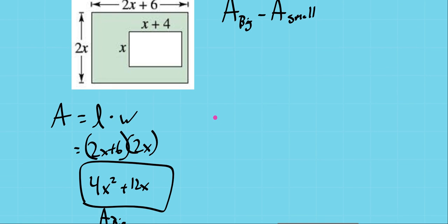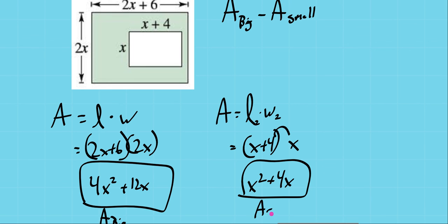Now let's take a look at the area of our small shape, which is also length times width. You can call it length 2 and width 2 if you like. The length here is x plus 4, and the width is x. So again, we'll distribute the monomial by the binomial. x times x is x squared, x times 4 is 4x. So this is the area of the small shape.